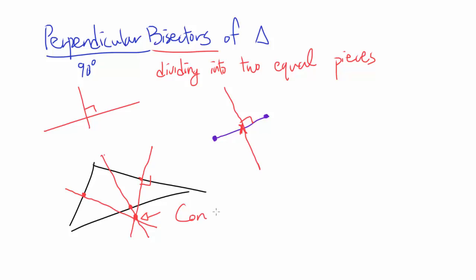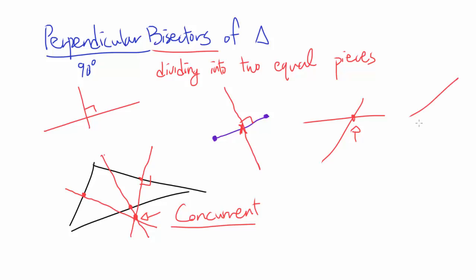It seems like they are concurrent. Concurrent means when three or more lines intersect at some point. When you have two lines, unless they are parallel, they are going to intersect. But when you have three lines, they don't have to intersect at the same one point.